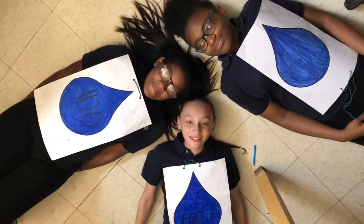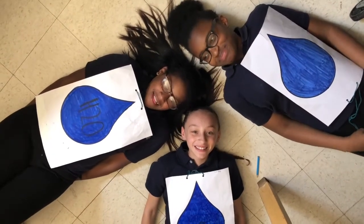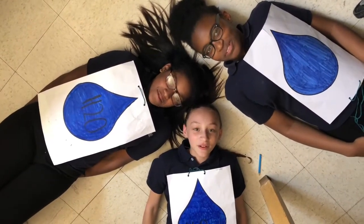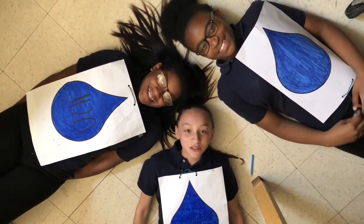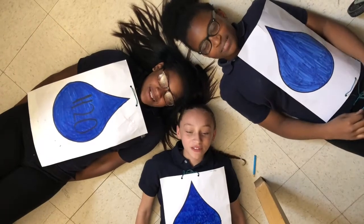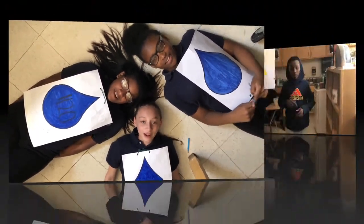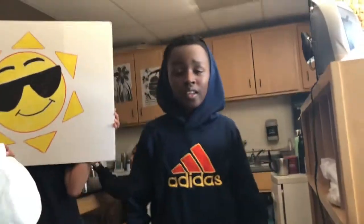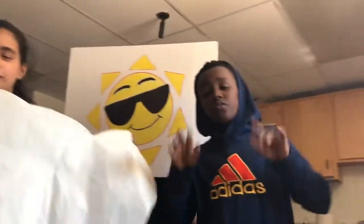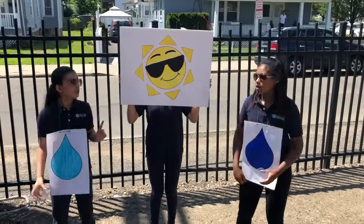It started from the bottom on the ground. It evaporated and condensed into a cloud. Now precipitation falling down. That's the water cycle, how water go around. Started from the bottom on the ground. It evaporated and condensed into a cloud. Now precipitation falling down. That's the water cycle, how water go around.